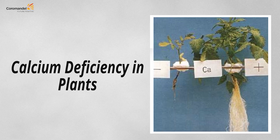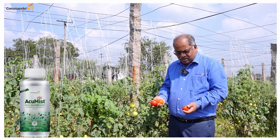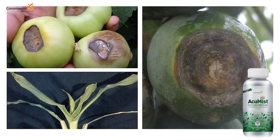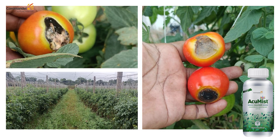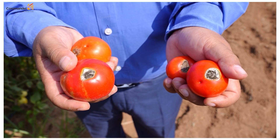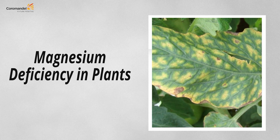Calcium, a secondary nutrient, is a structural component for new growing tips — roots, shoots, and new growing parts — similar to cement between bricks in a building. It is relatively immobile in the plant, so deficiency appears at the top. Root growth is restricted and leaves become very small. Typical calcium deficiency symptoms include blossom end rot in tomato and capsicum.